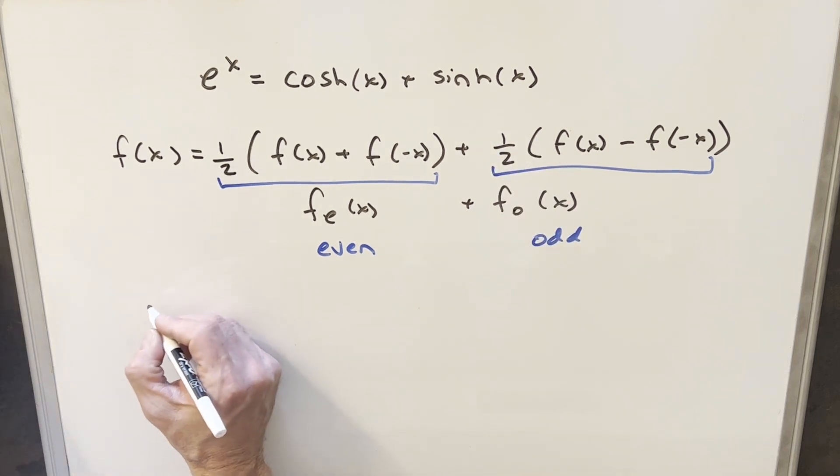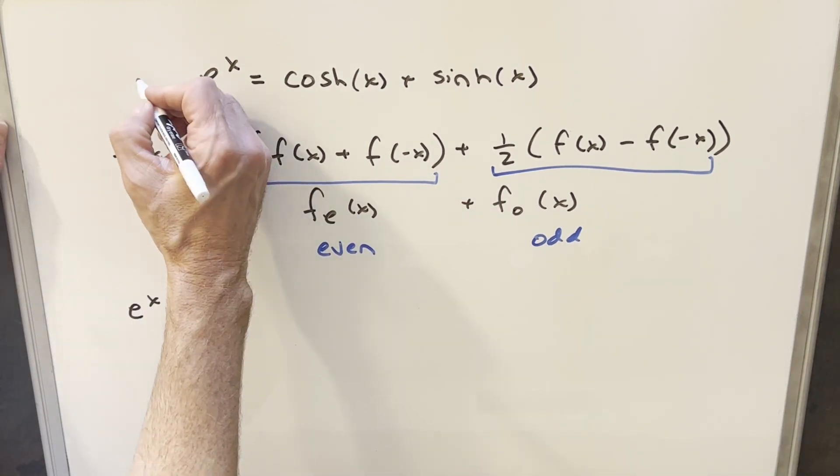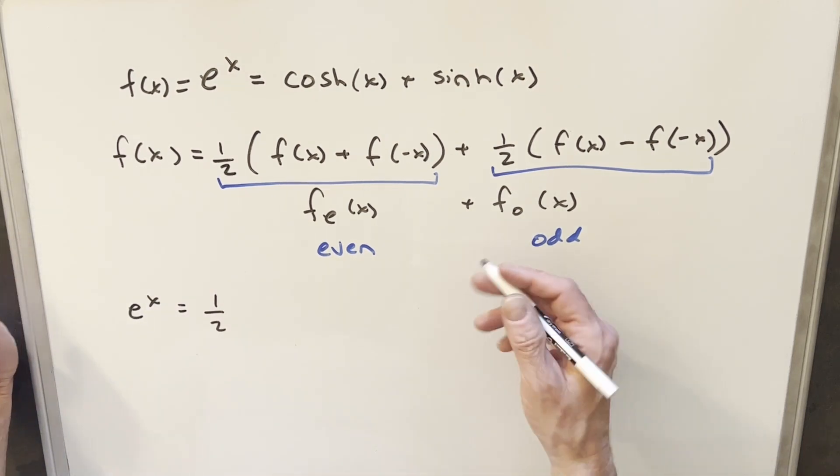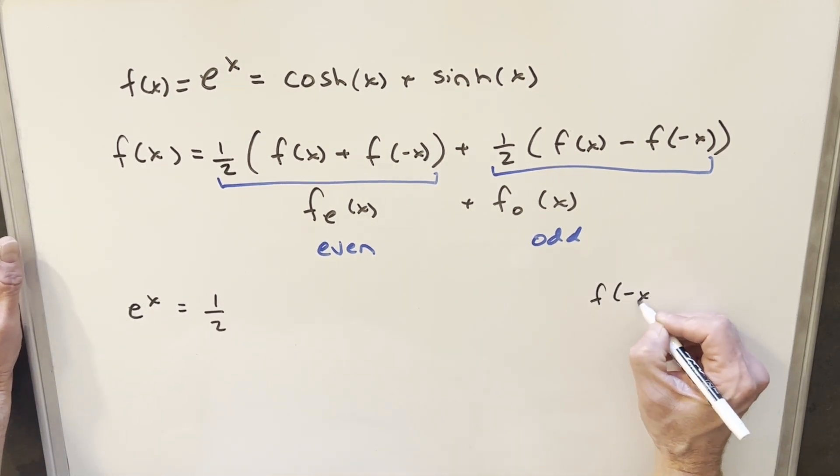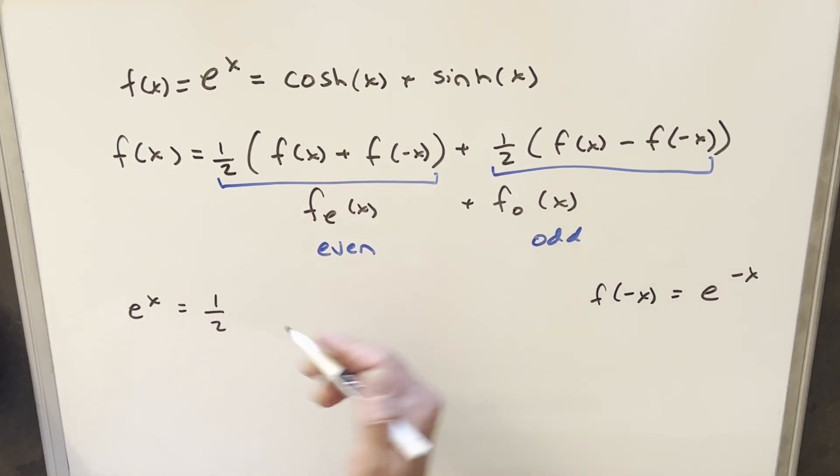So let's see how this works. We'll start with e to the x and follow along with this. This is going to be our f of x equals e to the x, and let's just find out what f of minus x is. Well, it's just going to be e to the minus x. So now we have everything, just plug in here.